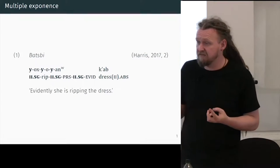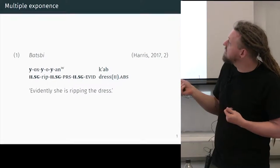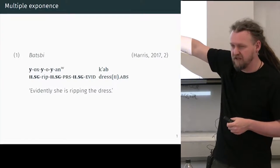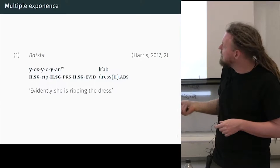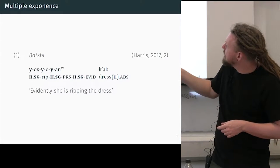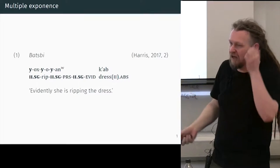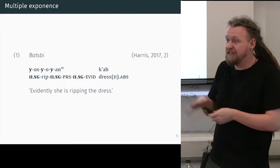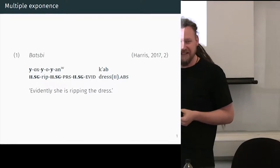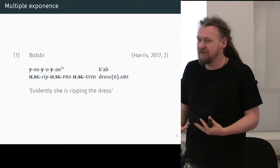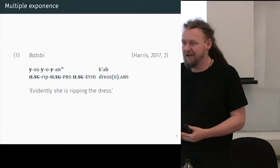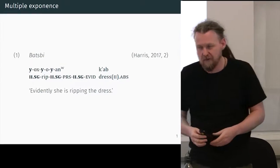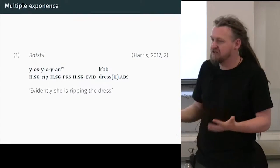In this example from Batsby, a Nakh-Daghestanian language spoken in the Caucasus in northeast Georgia, the verbs agree with the absolutive argument in both gender and number. So you can see here — if this is gender, gender two — we have these three gender markers. Having three doesn't make it in any way more gender two or more singular. It's just a grammatical fact of Batsby: you mark it multiple times. This is just redundant marking.